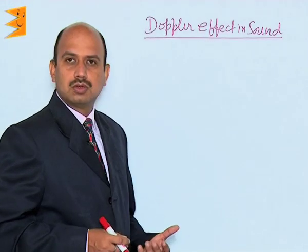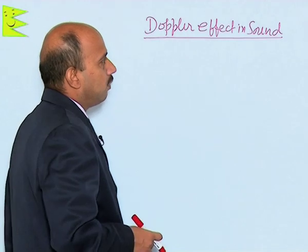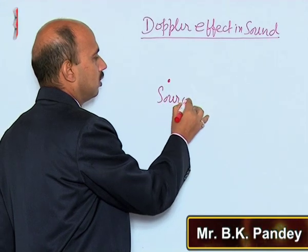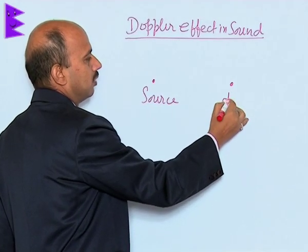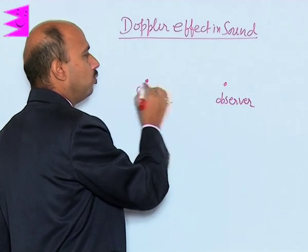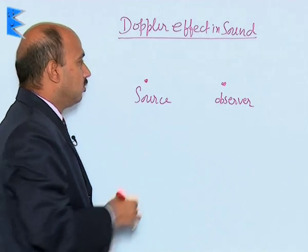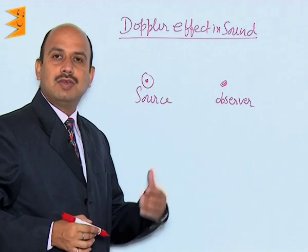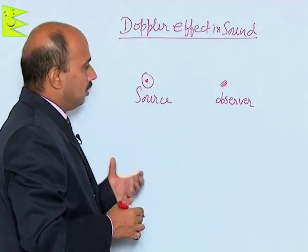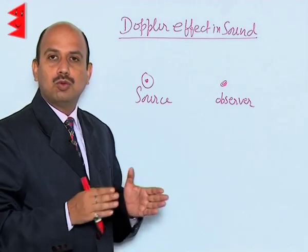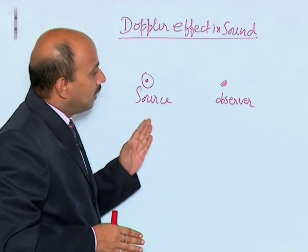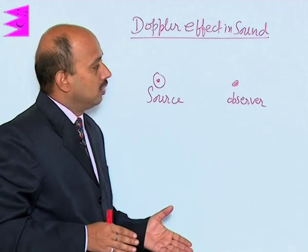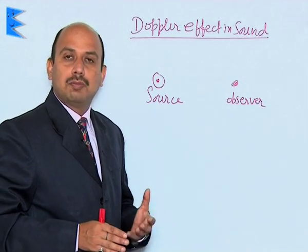Now, we see the Doppler effect in sound. What is the Doppler effect? For understanding the Doppler effect, suppose there is a source of sound and here is an observer. This source is producing sound and the observer is listening to or receiving the frequencies. Whenever there is relative motion between source and observer, the apparent frequency heard by the observer is different from the actual frequency. This phenomenon is known as the Doppler effect.